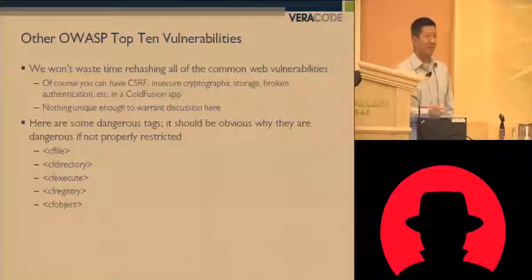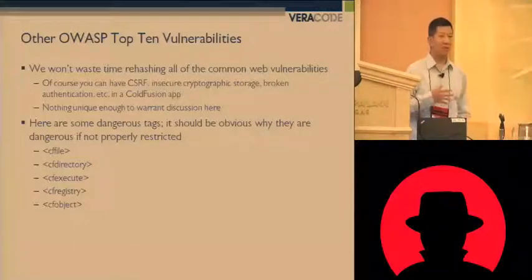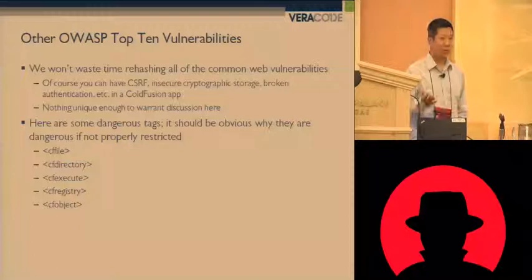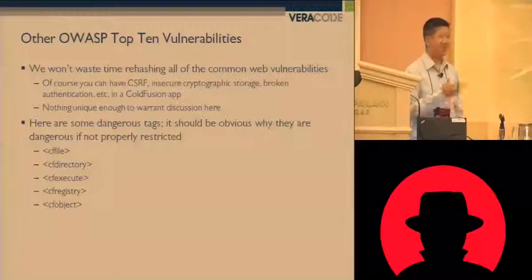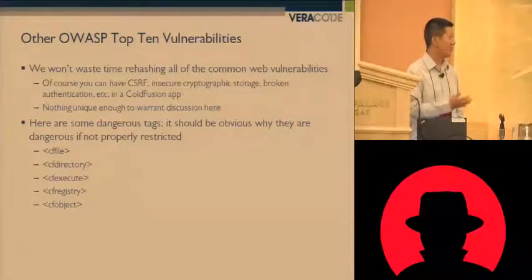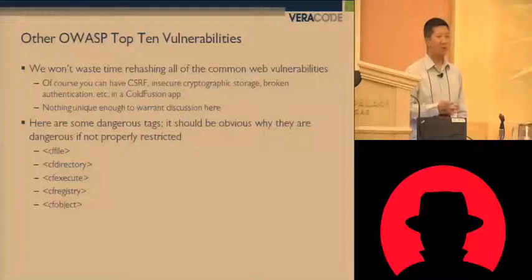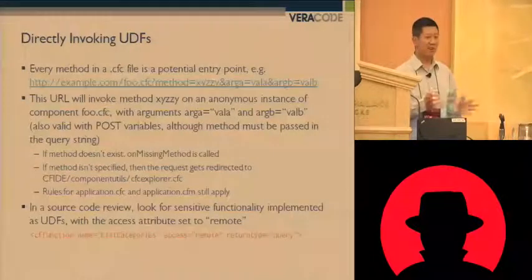We're not going to spend a lot of time looking at other common vulnerabilities in web applications because I want to spend time talking about classes of vulnerabilities that are unique to ColdFusion. But suffice it to say it's a web application platform — any vulnerability in the OWASP top ten or any popular web vulnerability is going to be possible in ColdFusion. ColdFusion has a lot of dangerous tags that make it easy to access the file system or the registry without writing a lot of code, so people are more likely to make dangerous mistakes, but there's nothing really unique about how the vulnerabilities manifest themselves.